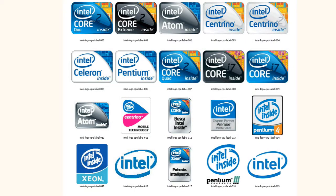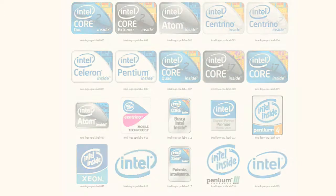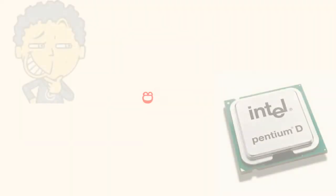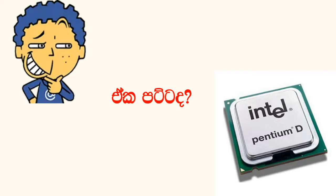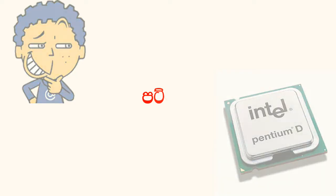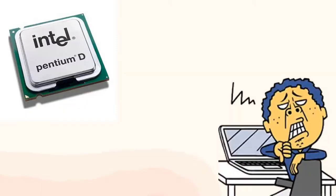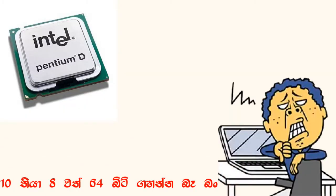Intel's brand name is Intel CPU. The Pentium D is the dual-core processor. The Pentium D is Intel's dual-core CPU line. The current performance of the operating system is the Pentium D.